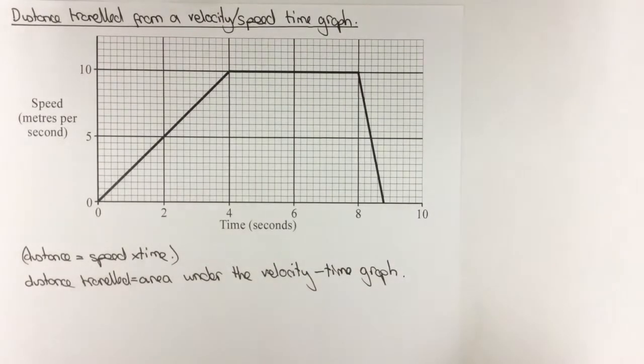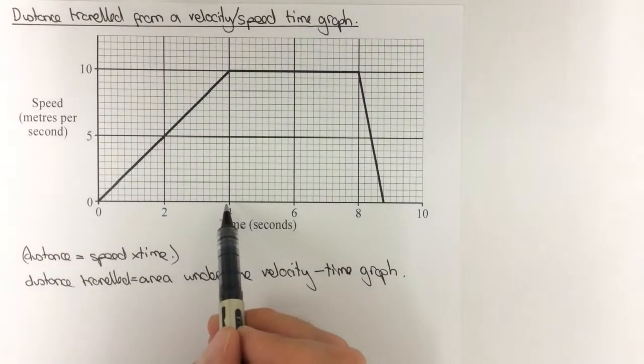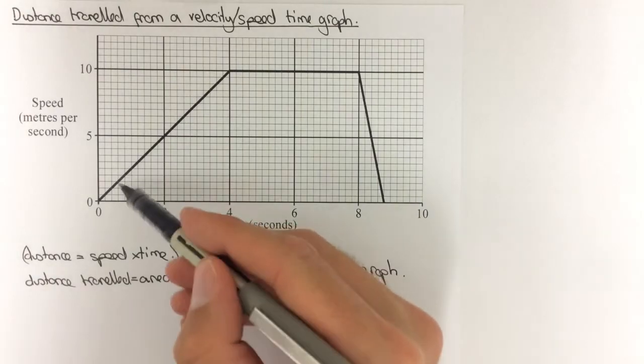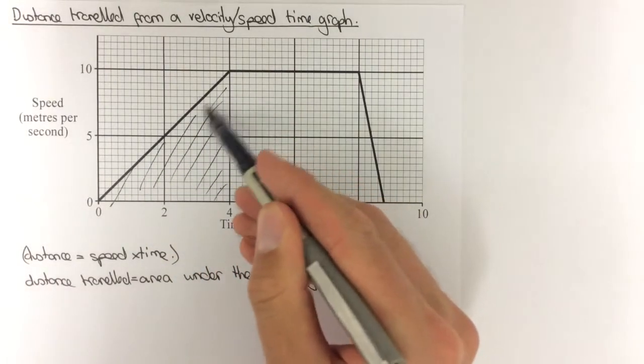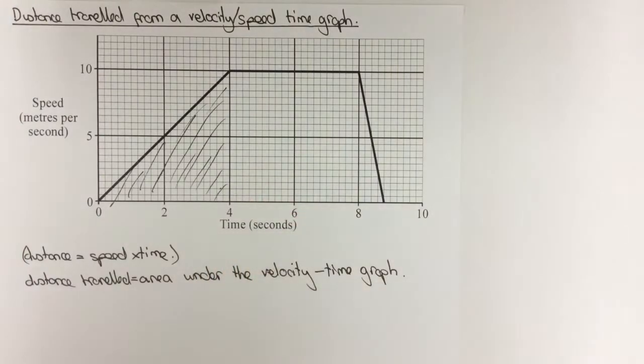So if we consider this first four seconds here then we need to find the area of this, and since it's a triangle we would need to do a half base times height.